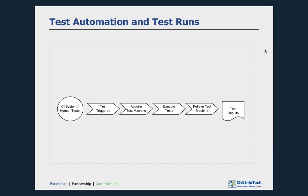Let us understand the problem in more detail. Consider any test automation project. The test automation solution built as part of the project has two intentions: that any tester from the same team is able to execute those tests wherever they desire, and that the tests can be scheduled through a continuous integration system so that developers get feedback whenever they have a nightly, weekly, or unscheduled build. Whenever an automated test is executed, it requires a test resource — a set of OS-browser combinations and a test machine. When the test suite is executed, the solution acquires that machine, executes the test, releases the machine, and provides the test results.